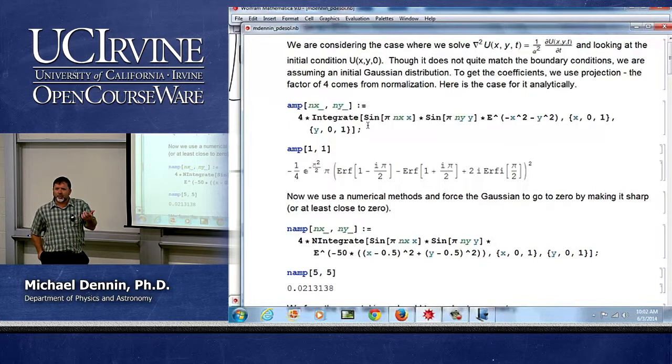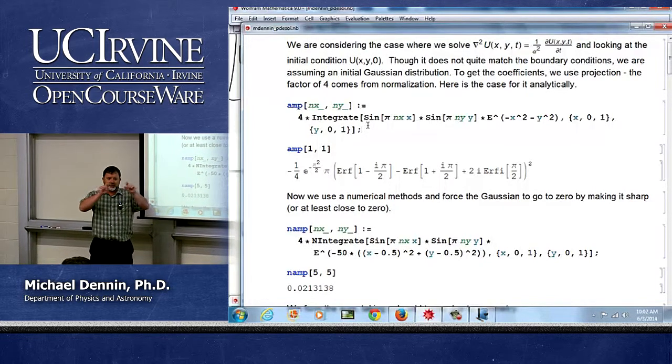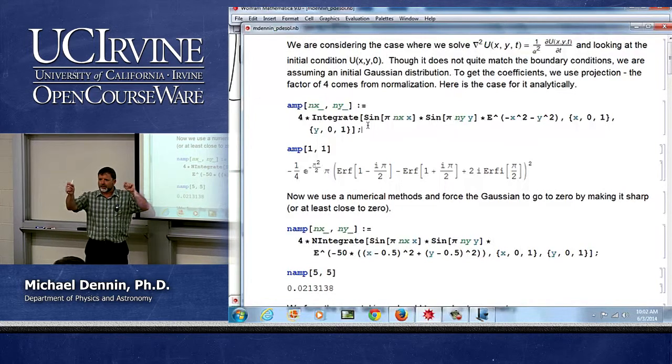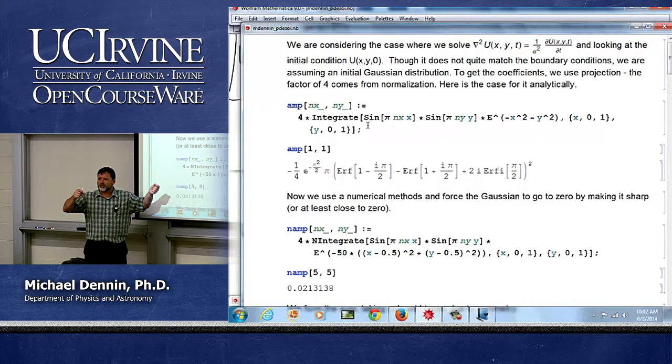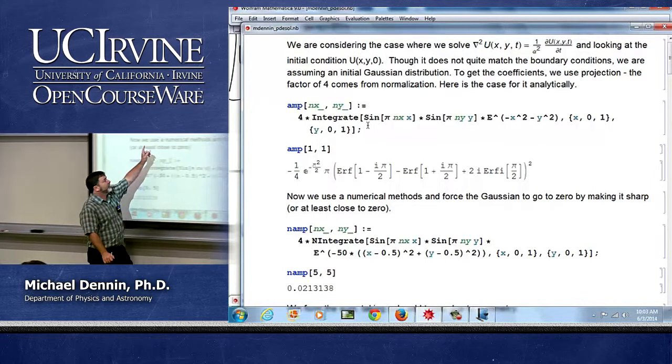Now since we're going back and doing a sum in the end, if you remember when we did Fourier series, I can either split my normalization and put it both in the series and with the basis function when I project, or I could put it all with one or the other. And the normalization of each of the sines requires a factor of 2.